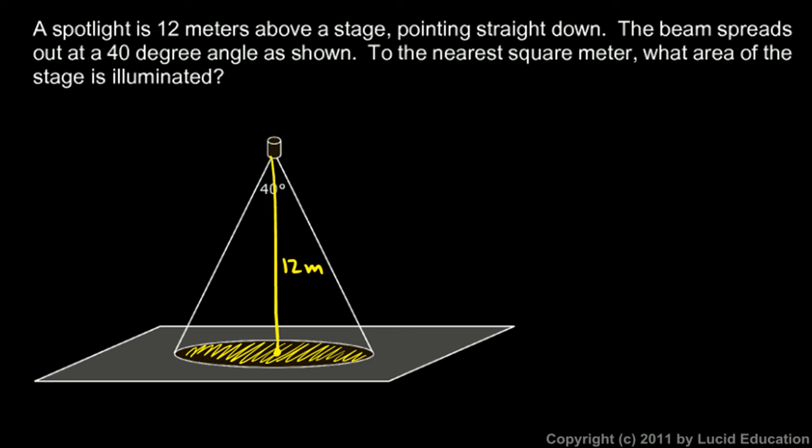So this angle is 40 degrees. Now be careful, look at this: this angle right here is 40 degrees. If we look at one of these triangles, either on the right side or on the left side, this angle and this angle would each be 20. So if we're thinking about a right triangle here, which is what we want to do because we're dealing with right triangle trigonometry, we want to deal with this 20 degree angle right there. To the nearest square meter, what area of the stage is illuminated? We're looking for this area right down here. To do that, we're going to say area is πr².